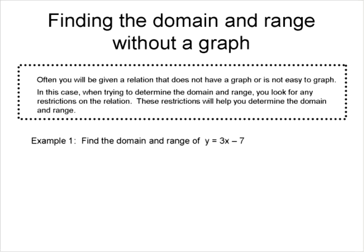What happens if we don't have a graph? Often you're going to be asked to determine the domain and range of a function or relation without a graph. So if you could graph it, we could easily find the domain and range. But what we're going to do in this case is assume that the relation is not easy to graph or we don't know how to graph. So what we're looking for is the restrictions.